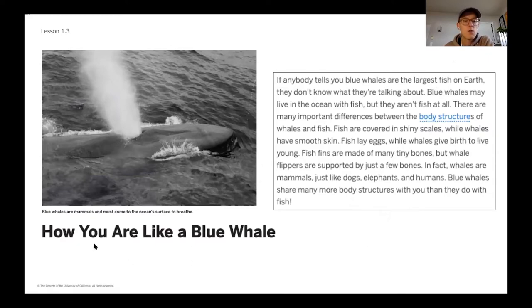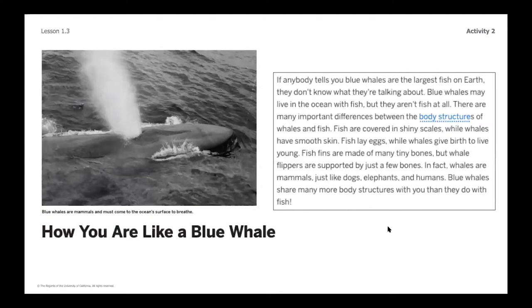So let's go ahead and jump into the reading. This reading is called How You Are Like a Blue Whale, which you might find something surprising in this article. If anybody tells you blue whales are the largest fish on earth, they don't know what they're talking about. Blue whales may live in the ocean with fish, but they aren't fish at all. There are many important differences between the body structures of whales and fish. Fish are covered in shiny scales, while whales have smooth skin. Fish lay eggs while whales give birth to live young. Fish fins are made of tiny bones, but whale flippers are supported by just a few bones. In fact, whales are mammals, just like dogs, elephants, and humans.